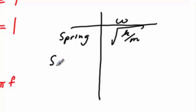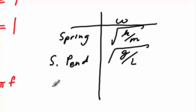If we have a simple pendulum, which is a point mass at the end of a massless string, then the ω will be the square root of the gravitational constant g divided by the length of the string.